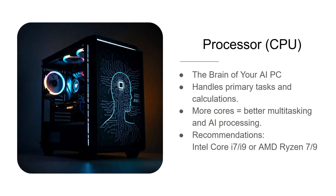The first component is the processor, or CPU. It is the brains of any AI PC — any PC, really. It handles all your primary tasks and calculations, and the more cores that you have, the better it will handle multitasking tasks. With AI processing, it is all about multitasking.